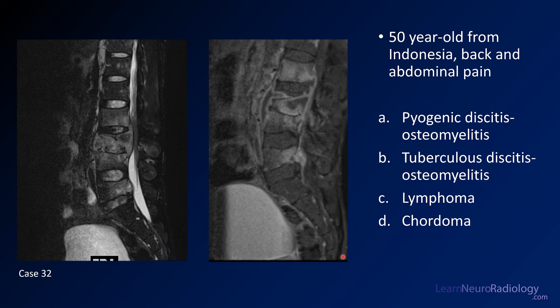Case 32 is a 50-year-old from Indonesia with back and abdominal pain. We have two images: a sagittal T2 and a sagittal post-contrast image. Your choices are pyogenic diskitis, tuberculous diskitis, lymphoma, and chordoma.